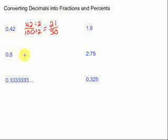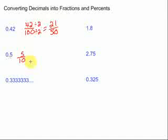Let's take a look at the next one, 0.5. Now 0.5 is correctly read as 5 tenths. Sounds like a fraction to me. 5 tenths. Remember our decimal places are tenths, hundredths, thousandths, ten thousandths, and so on.